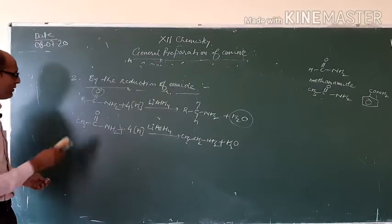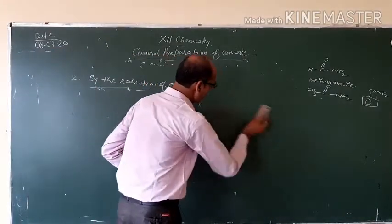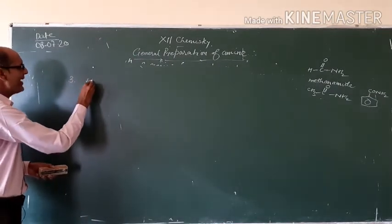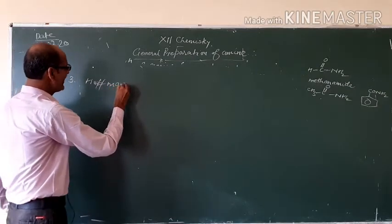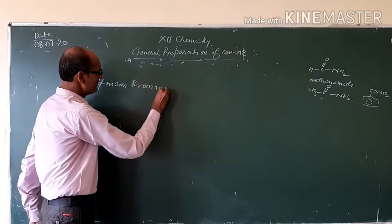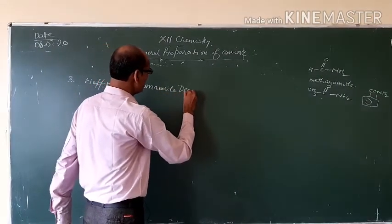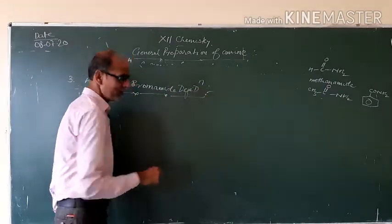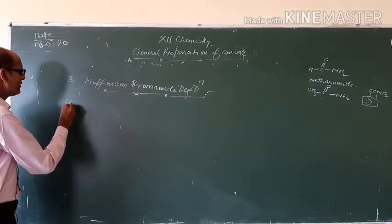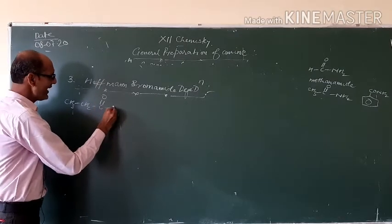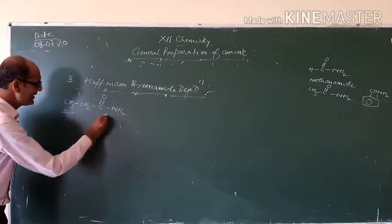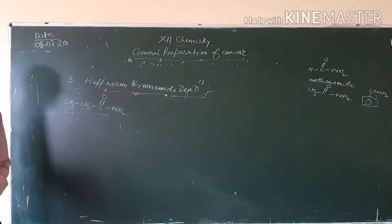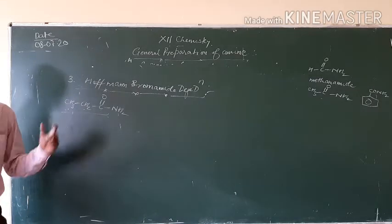The next very important method is the Hofmann bromamide degradation. In this method, amide is converted to amine with one less carbon. For example, CH3–CH2–CO–NH2 has three carbons, and you want to prepare an amine with two carbons. So we use Hofmann bromamide degradation, using bromine (Br2) in the presence of an alkali such as NaOH or KOH in alcoholic medium.